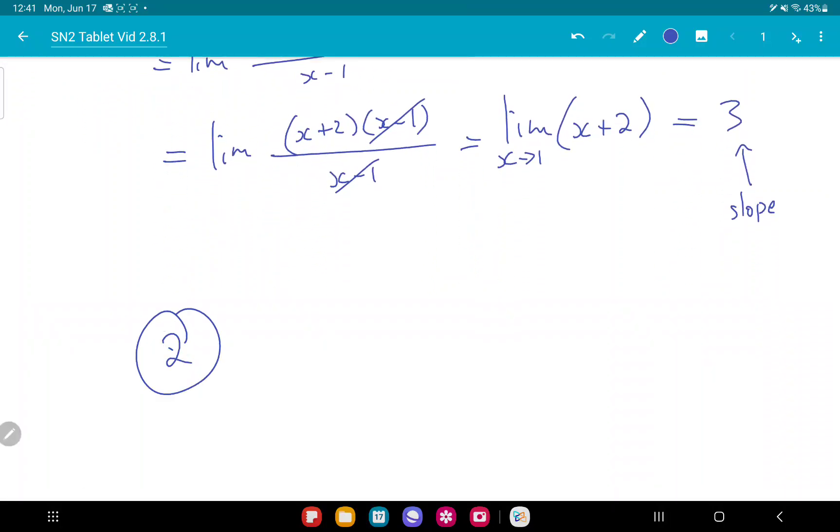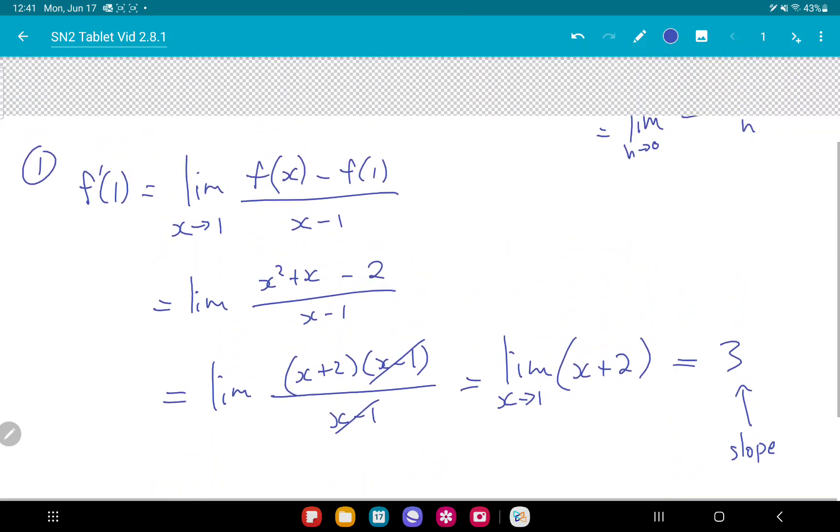So for part two, we have a tangent line, or just any line is y equals ax plus b. And I'm going to plug in my slope. You know what? I've used the letter a already today.